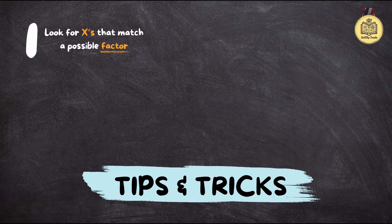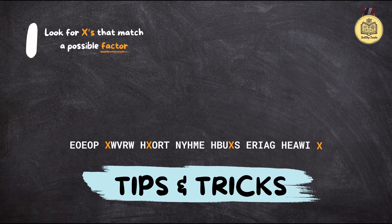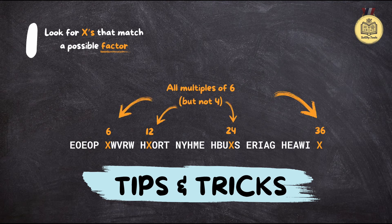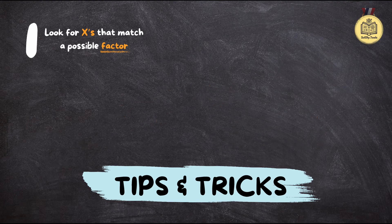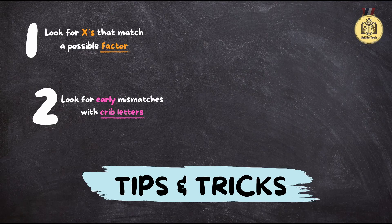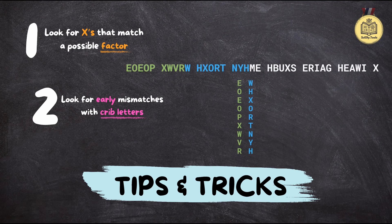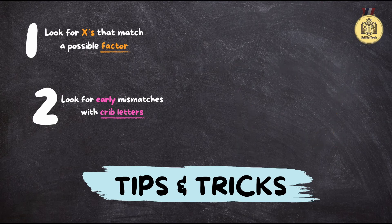Ready for some pro tips? Remember where those X's were in our example — at positions 6, 12, 24, and 36. All multiples of 6. It's like a little whisper telling you 6 columns might be the way to go. If we had noticed that right away — boom, straight to the answer. That kind of thinking can save you precious time in a competition. Another tip is what we call early mismatch detection: pay close attention to your crib letters as you're writing out the columns. If you notice the crib letters are messed up even before you finish a column, just stop and try a different column count. The sooner you recognize a mistake, the less time you waste.